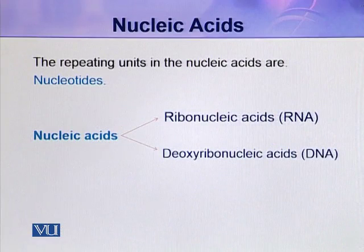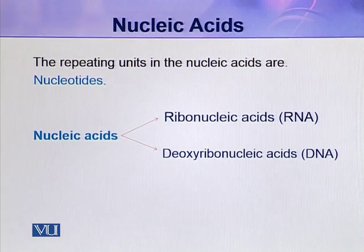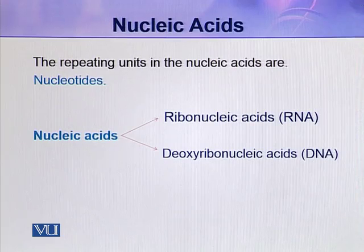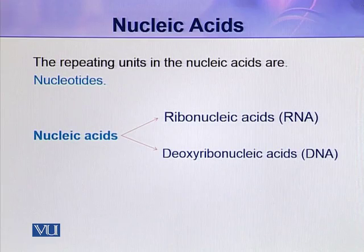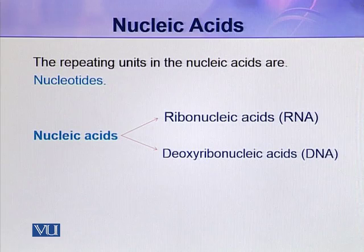Nucleic acids are mainly of two types: ribonucleic acids and deoxyribonucleic acids. Ribonucleic acid is abbreviated as RNA, while deoxyribonucleic acid is abbreviated as DNA. There are three types of RNAs: tRNA (transfer RNA), rRNA (ribosomal RNA), and mRNA (messenger RNA). They have a number of functions to perform in the cell, mainly during protein synthesis.